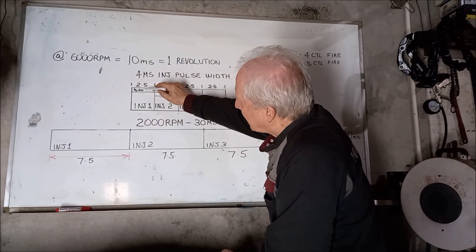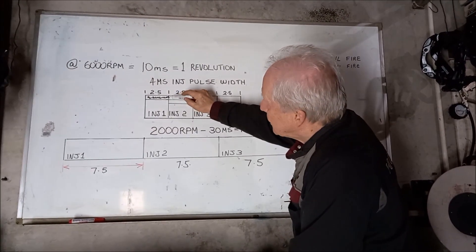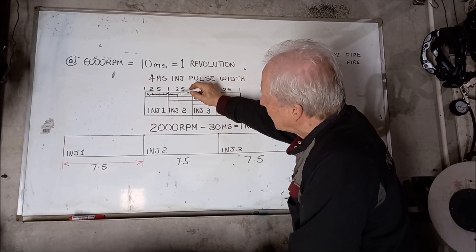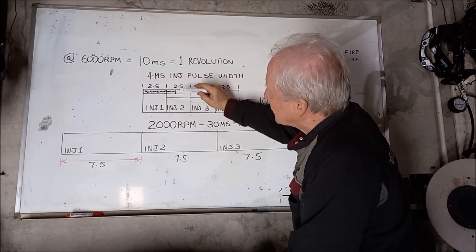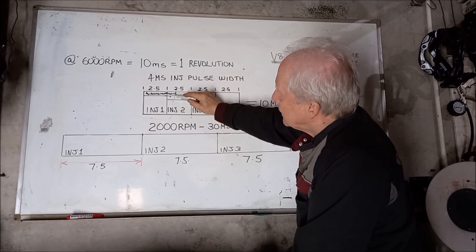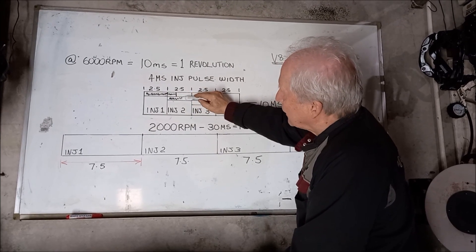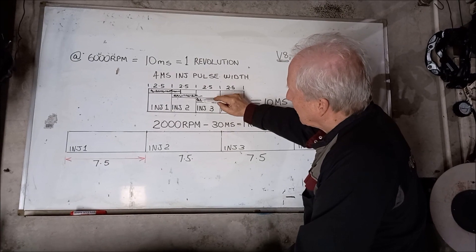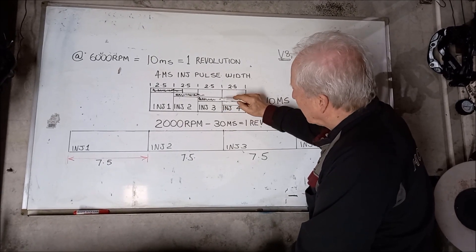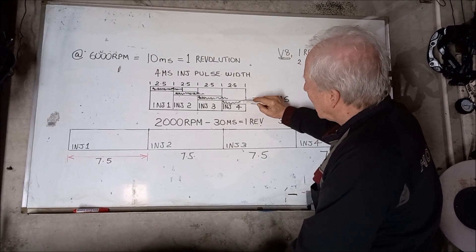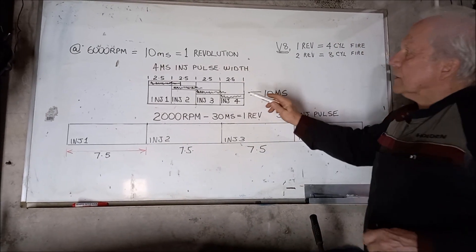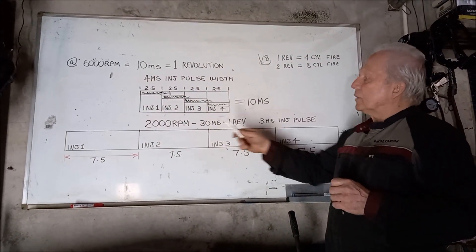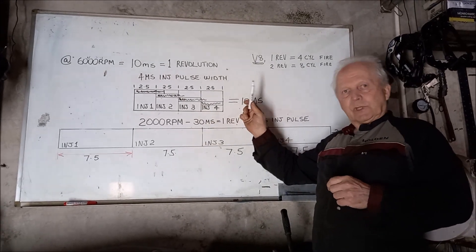Well actually it's pretty easy. What happens is if this is the injector pulse here, it just continues on into the next window, so to speak. So that would be say four milliseconds there. Number two injector has already started, it's starting to inject as well and it overlaps number three. So number three overlaps and then finally number four overlaps.